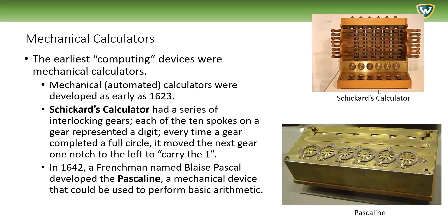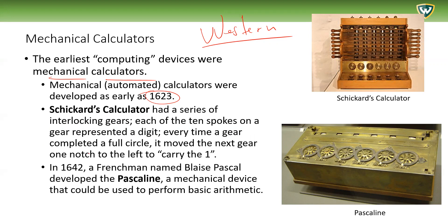Origins of computers. Computers first began as mechanical calculators — automated mechanical calculators. The earliest computing devices were such mechanical calculators and were developed as early as 1623. Schickard's calculator had a series of interlocking gears. Each of the 10 spokes on a gear represented a digit. Every time a gear completed a full circle, it moved the next gear one notch to the left to carry the one — essentially an automated process for doing a mathematical operation.